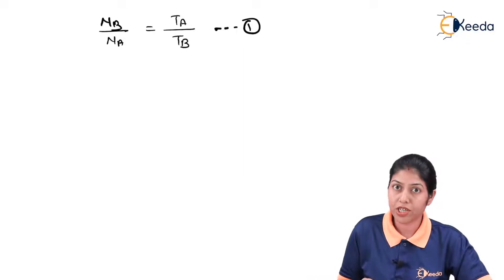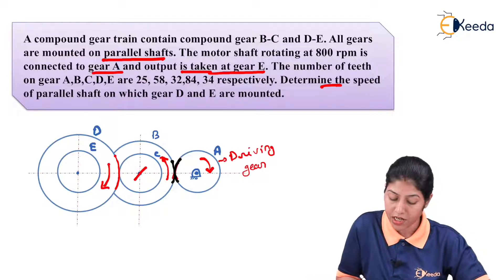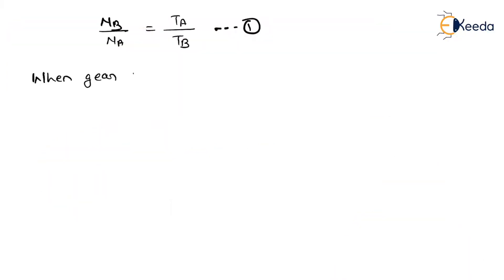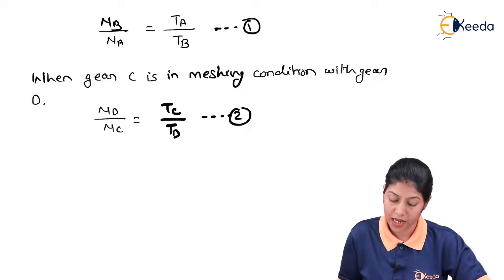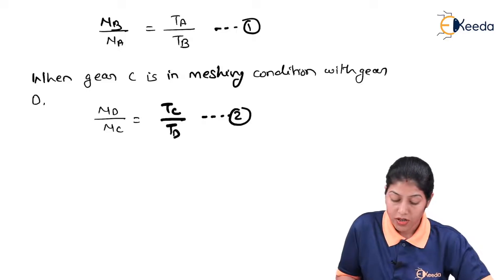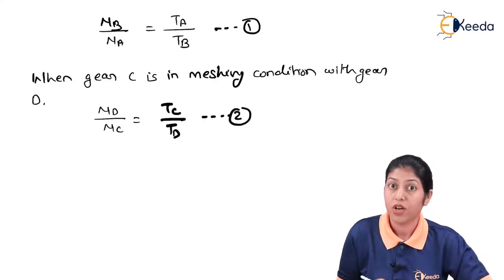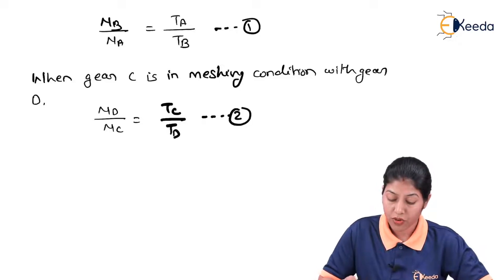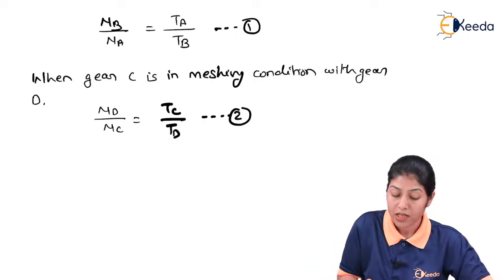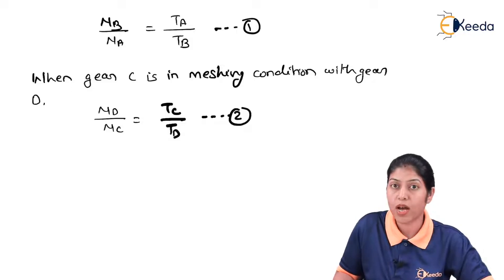For the second meshing condition when gear C is in meshing with gear D, the equation is: ND / NC = TC / TD. This is equation 2. For the compound gear train, the speed ratio is the multiplication of equation 1 and equation 2.